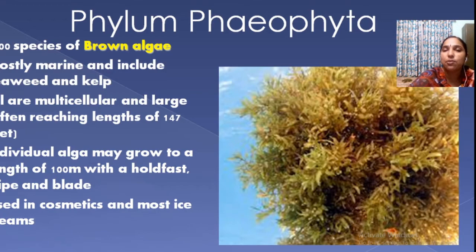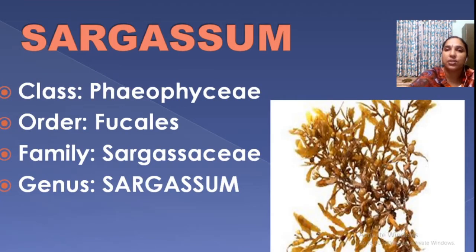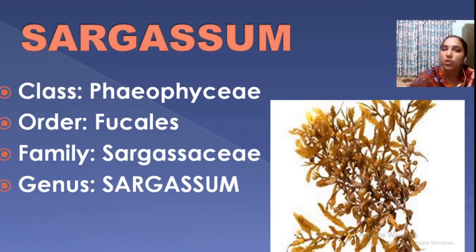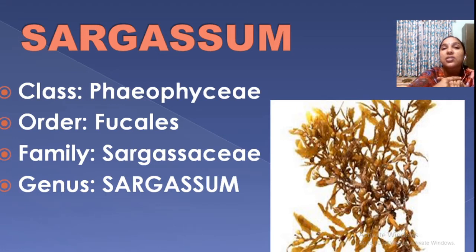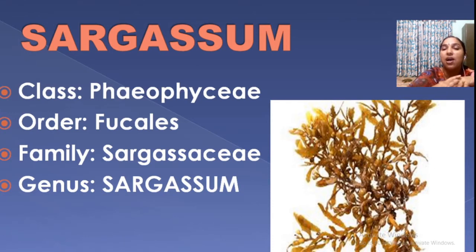One among the brown algae is Sargassum. In your syllabus you have to study Sargassum as a type example for brown algae. Sargassum belongs to phylum Phaeophyta, class Phaeophyta, order Fucales, family Sargassaceae, and genus Sargassum. You may have heard about the Sargasso Sea — a common name for a sea that is spread with kelp, that is Sargassum.